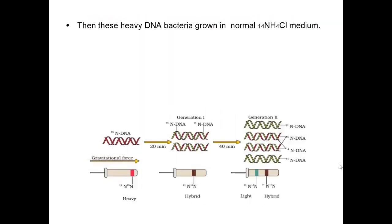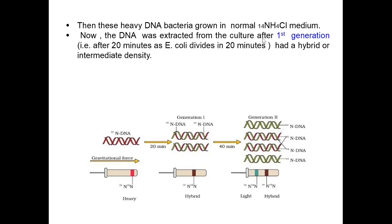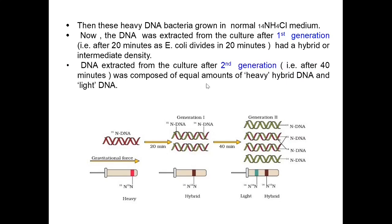These heavy DNA bacteria were then grown in normal ammonium chloride solution. DNA extracted from the culture after the first generation — that is after 20 minutes, as E. coli divides in 20 minutes — had a hybrid or intermediate density. So intermediate or hybrid DNA was found in the first generation. The DNA extracted after the second generation, that is after 40 minutes, was composed of equal amounts: 50% heavy hybrid DNA and 50% light DNA. This proves semi-conservative DNA replication.